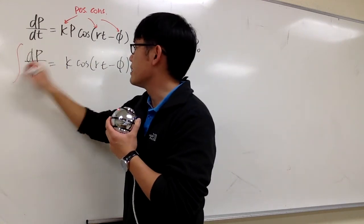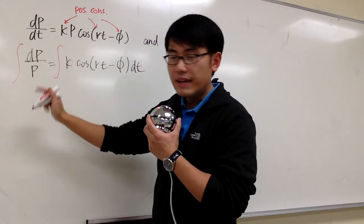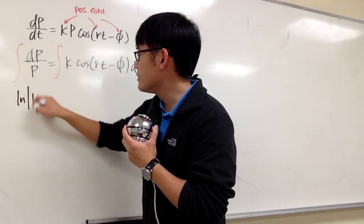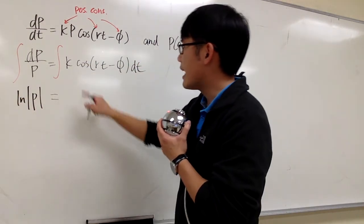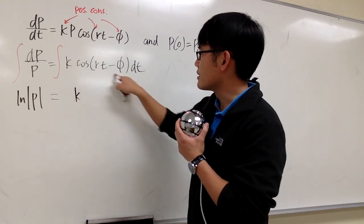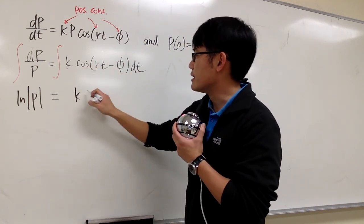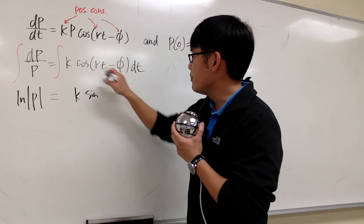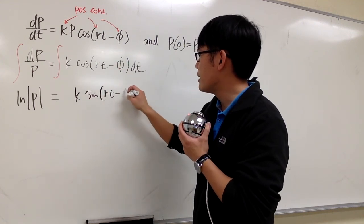And this way we can integrate both sides, here and here. On the left-hand side, we have ln absolute value of p, and on the right-hand side, the k is just a constant. Put it down, cosine of something, where the antiderivative of cosine is positive sine. And the input stays the same, just rt minus v.